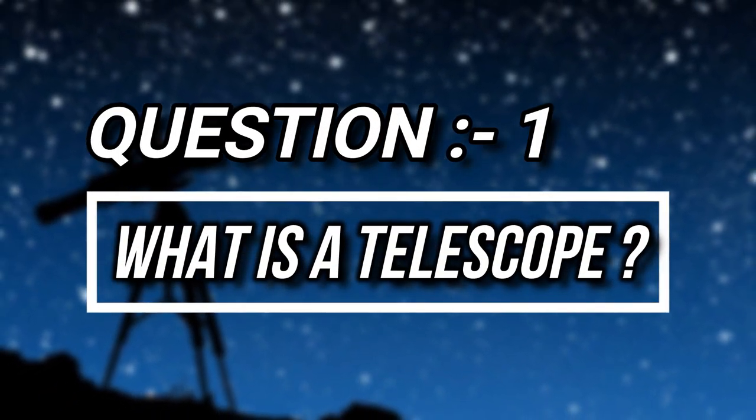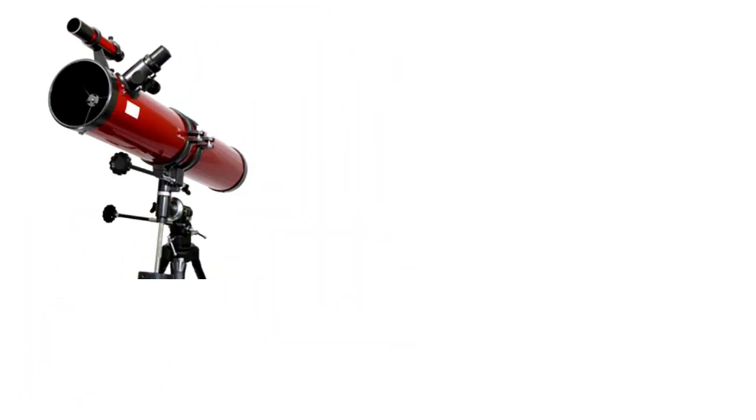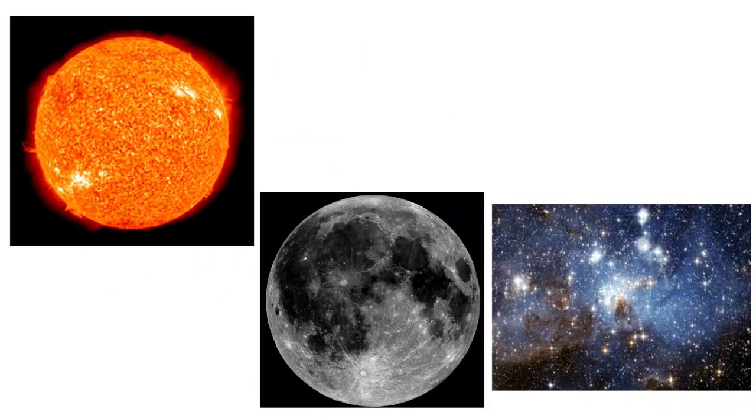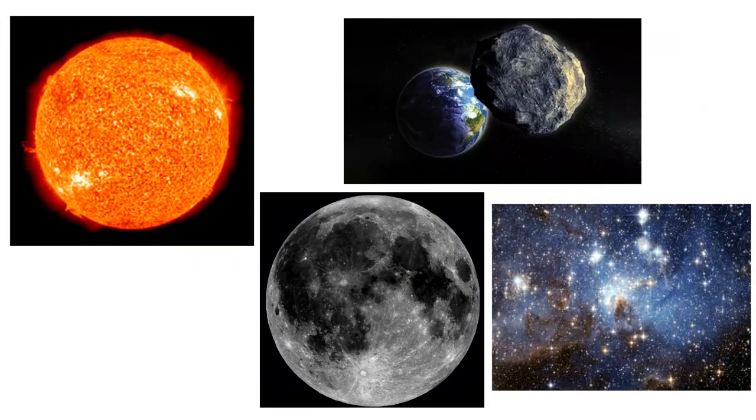Question number 1: What is a telescope? A telescope is an optical instrument which is used to see the far things in space like the sun, moon, stars, asteroids, planets, etc.